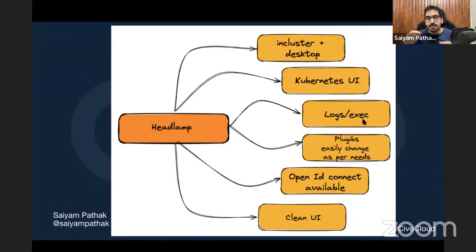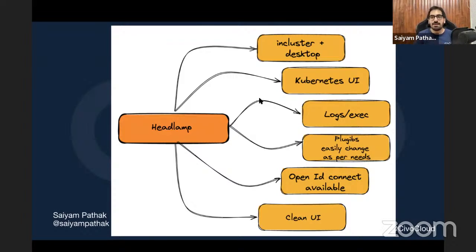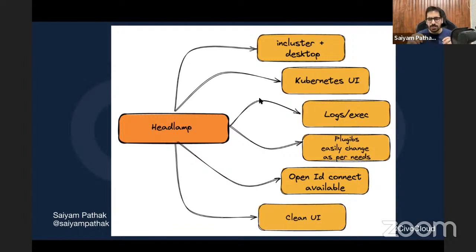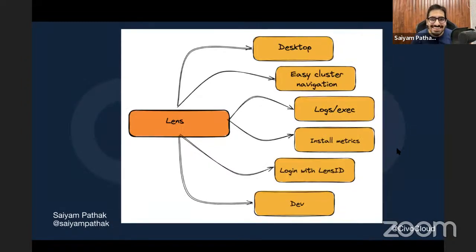Next is Headlamp, by Kinvolk. It is also in-cluster but also has a desktop version, giving you both options. It has basic Kubernetes UI features and plugin support that lets you customize the UI without maintaining a fork of the repository - you can create plugins and customize things yourself. OpenID Connect is available, and it has a clean UI that looks good.